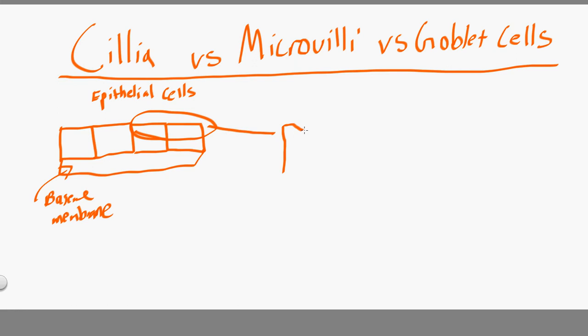We're talking about the difference between cilia, microvilli, and goblet cells as they relate to epithelial cells. When it has these little wavy points, the microvilli are the little top hills — the little finger-like projections. These increase the surface area, meaning if you stretched out the top part, it would be longer than if it were straight.